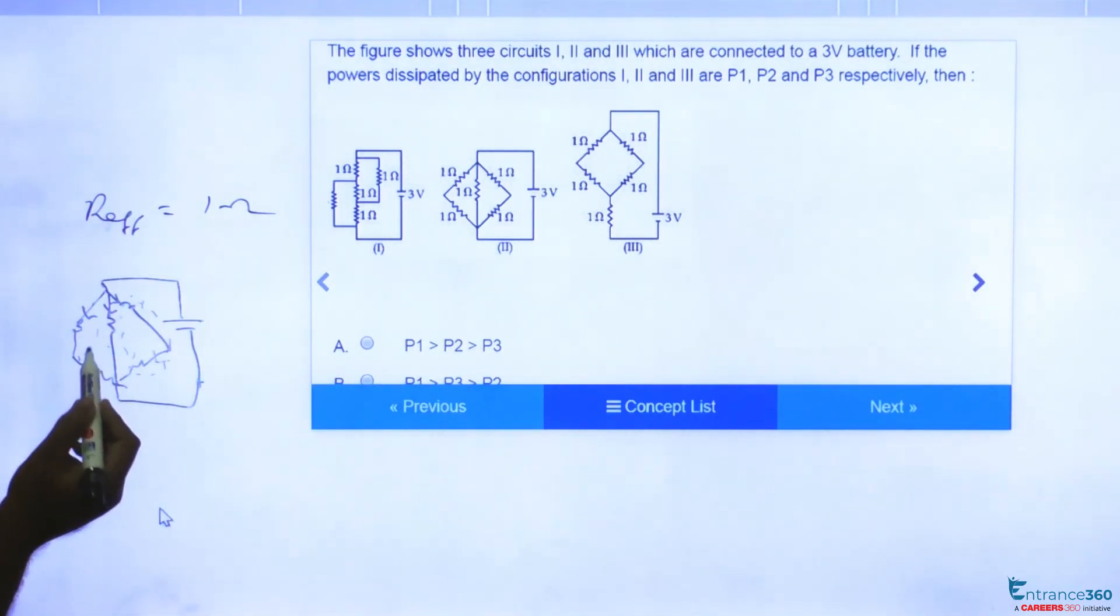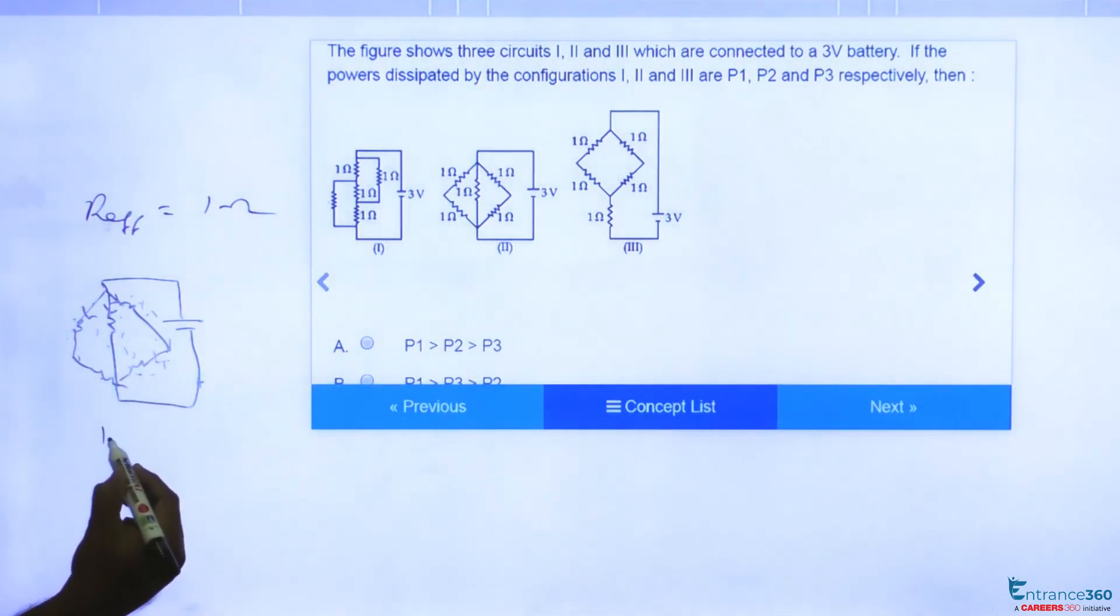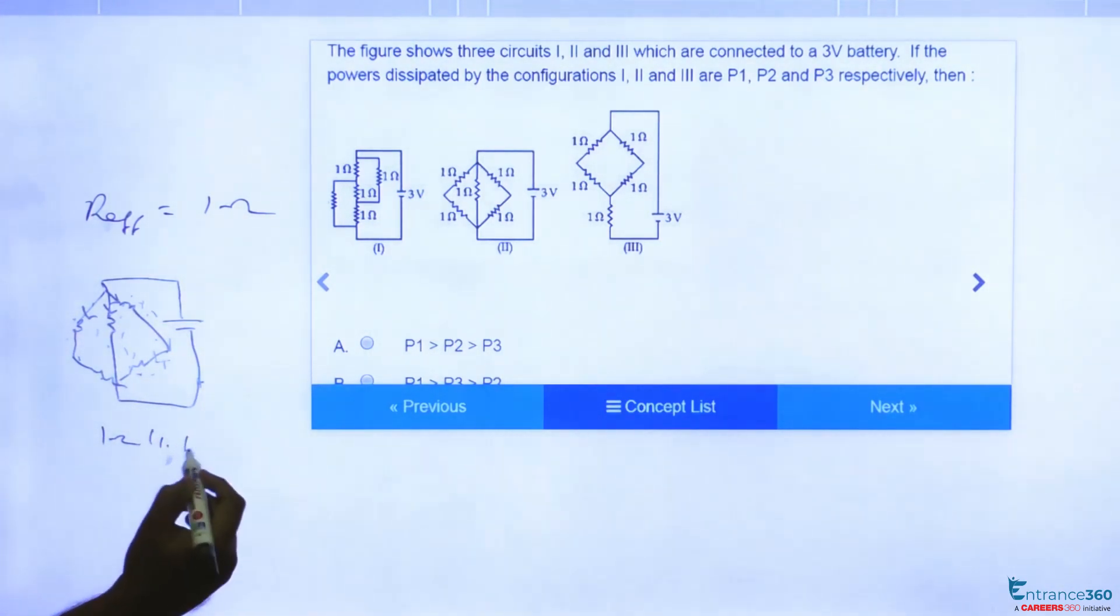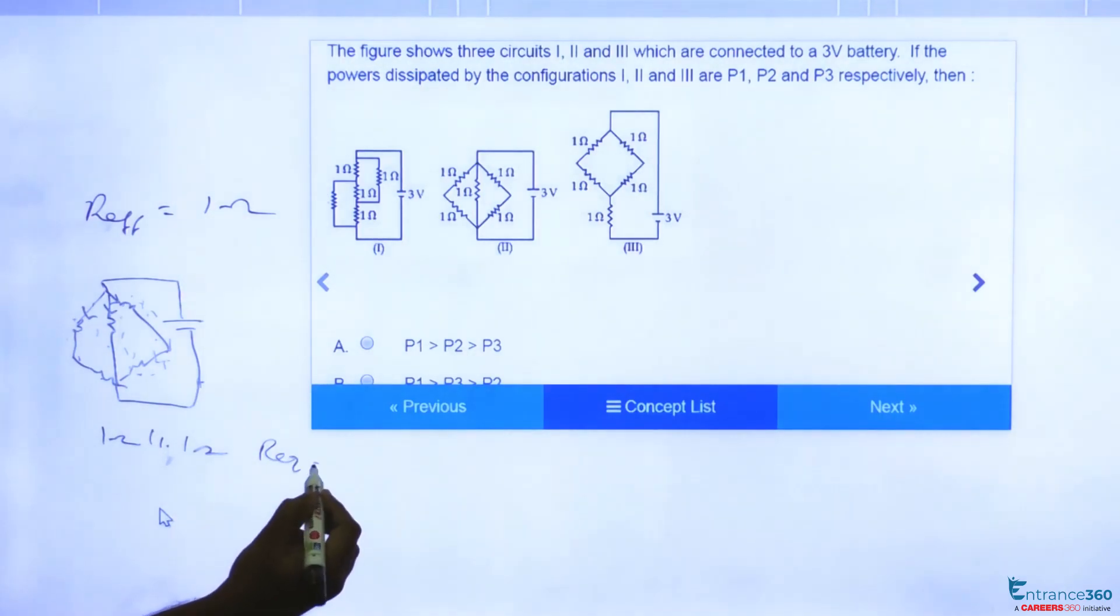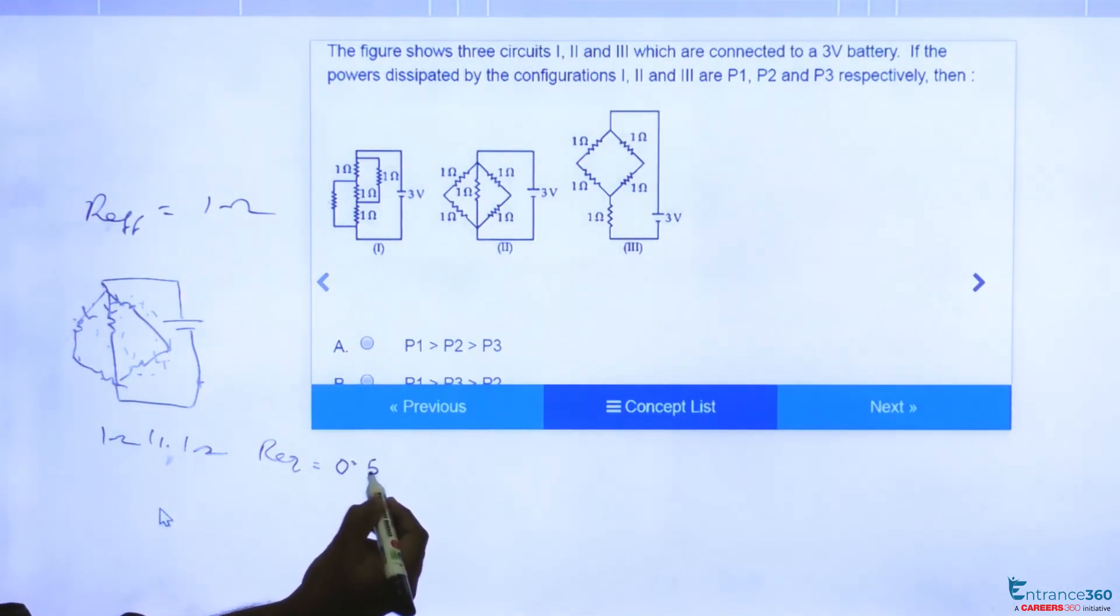Each resistor is one ohm. So combination of these two is parallel to this, parallel to this. This is 2 ohm, this is also 2 ohm. So 2 ohm parallel to 2 ohm will give one ohm which is parallel to another one ohm. So net equivalent resistance of circuit will be 0.5 ohm. This is for second circuit.